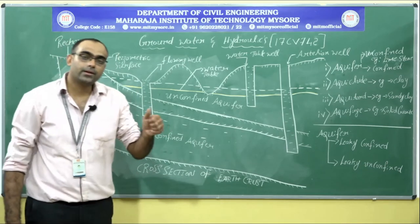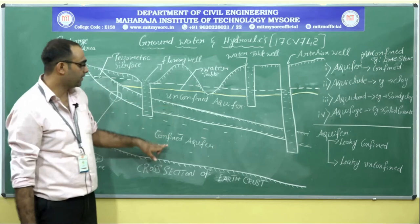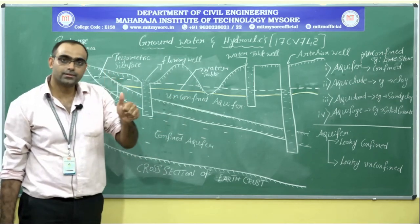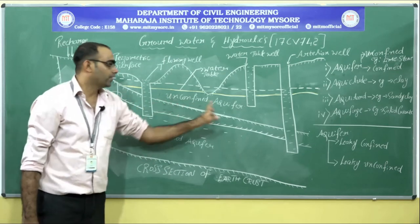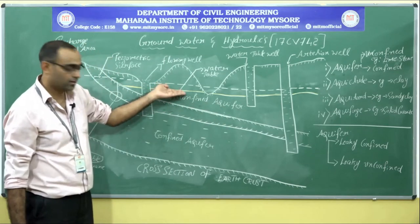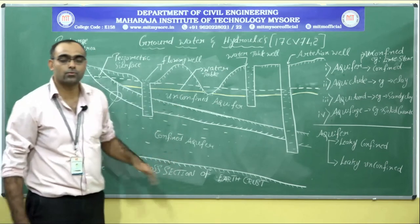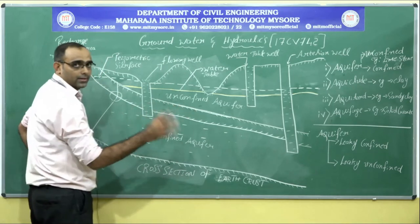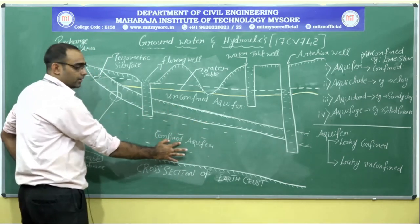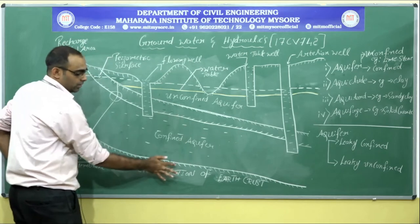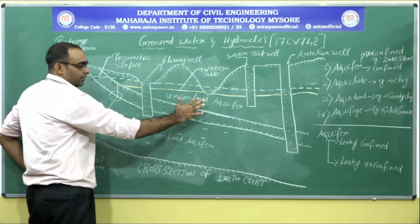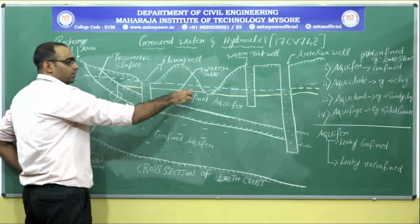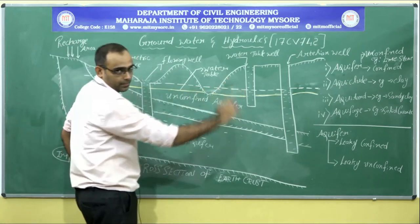In the exam, they may ask what is the difference between a confined aquifer and an unconfined aquifer. The basic difference is: for an unconfined aquifer, there will be a free water table; for a confined aquifer, there will not be any free water table. For the confined aquifer, it is sandwiched between two impermeable membranes; for the unconfined aquifer, the bottom is an impermeable membrane and the top is a water table.